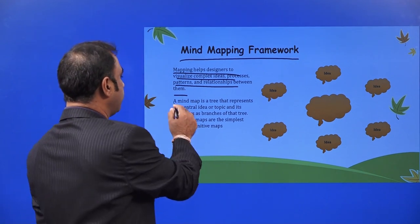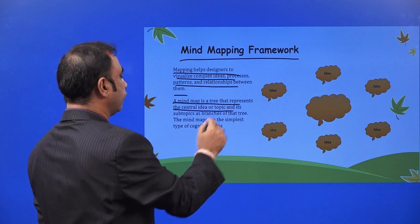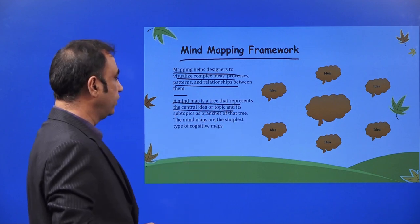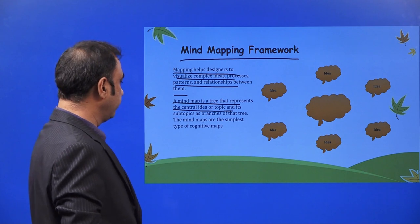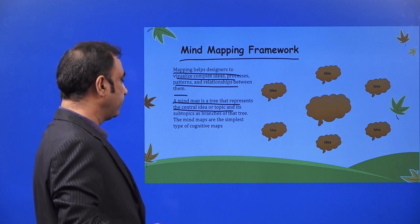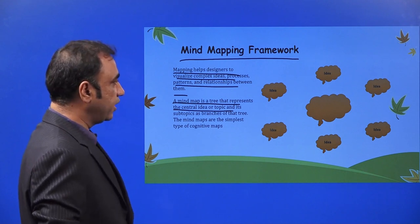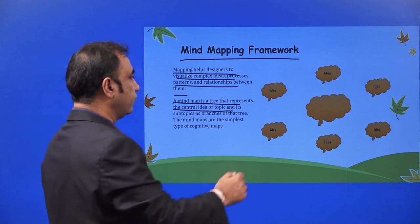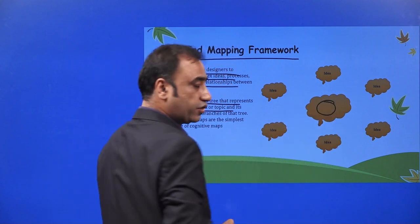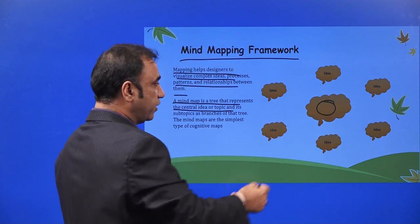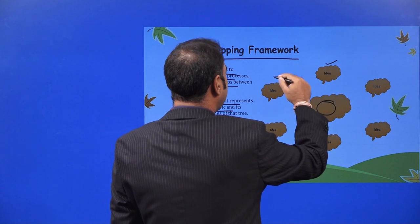A mind map is a tree that represents the central idea or the topic and its subtopics as branches of that tree. Mind maps are the simplest type of cognitive maps. You can see over here — this is the central idea. Based on this central idea, we have other ideas.